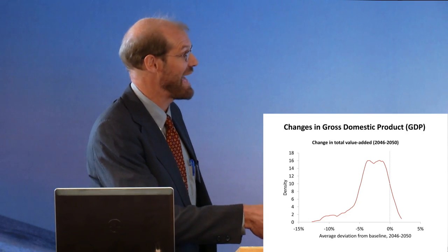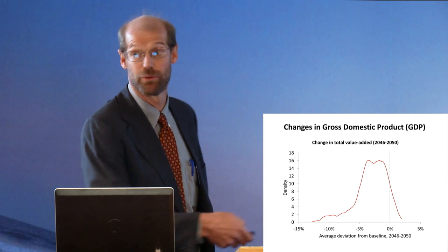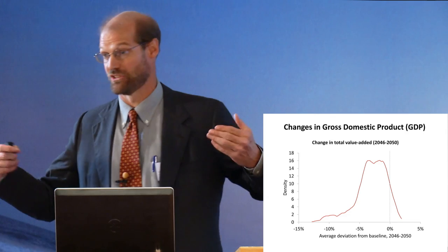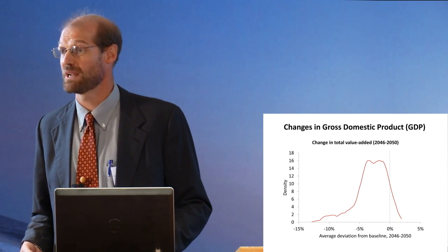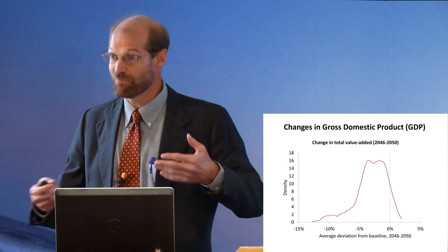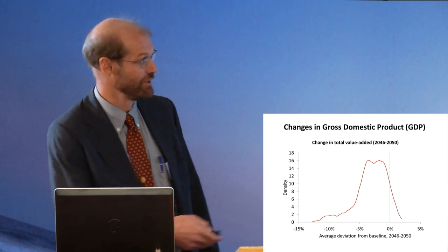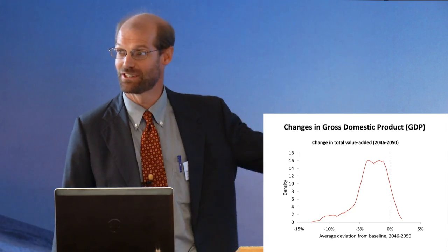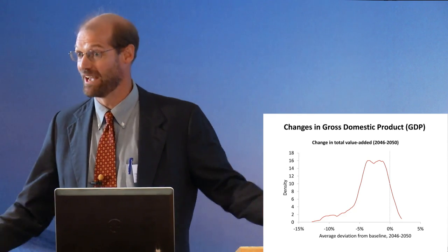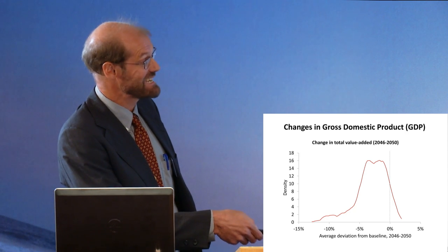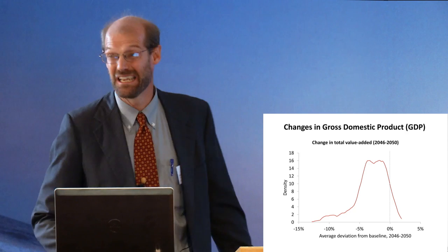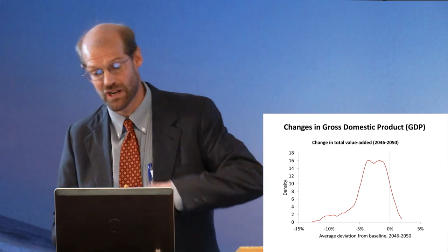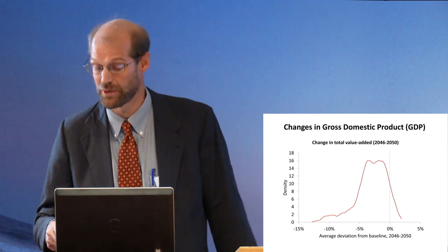We have a bad tail that extends all the way down to greater than 10% GDP impacts. This is very useful information. I've now stood in front of a number of Southern African policymakers with one scenario here and a few around here and sort of said, 'well, they're different, but what does it mean?' Here we could say there's a bad tail, but it's not that likely — it's around 3% of the outcomes. Now we're going to go through and see how we came up with this.